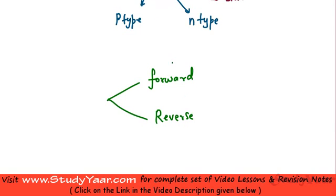What does this mean? Forward bias means your P-type is at a higher potential. Your reverse bias means your N-type is at a higher potential.